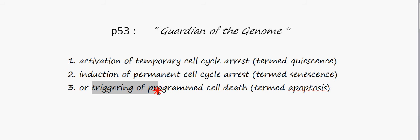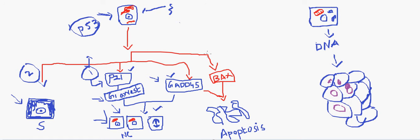The third mechanism is the triggering of programmed cell death, that is apoptosis. This is the ultimate method of the p53 gene, done with the help of the BAX gene, which is a pro-apoptotic gene that tells the cell to undergo apoptosis — that is, induction of cell death. This mechanism is also activated when DNA repair fails, sending cells to undergo apoptosis so they do not divide further or acquire mutations leading to malignancy.